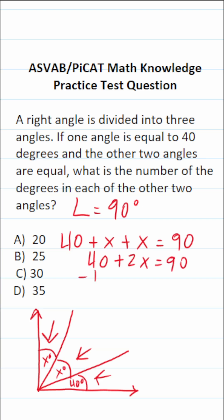Let's solve for x by first subtracting 40 from both sides of this equation. This crosses out. This says 2x equals 90 minus 40 is going to be 50.